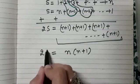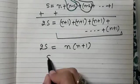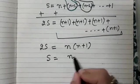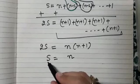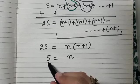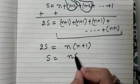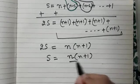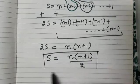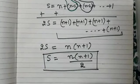So 2S is equal to n into n plus 1. So what will be S? S is representing sum of first n natural numbers. So it will be n into n plus 1 by 2. See how beautifully we have derived the formula.